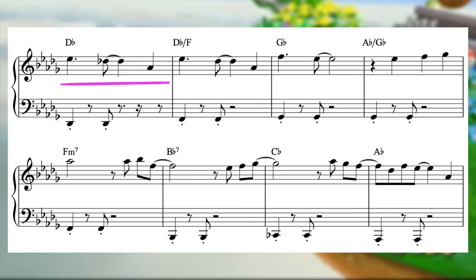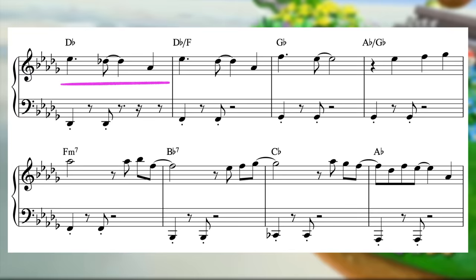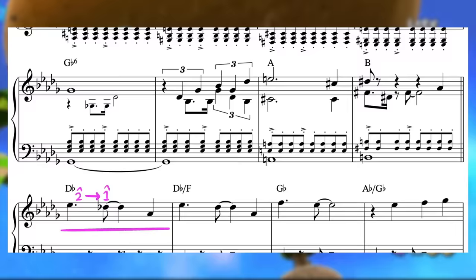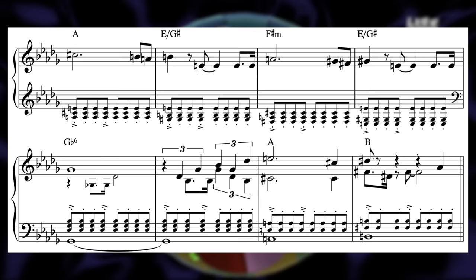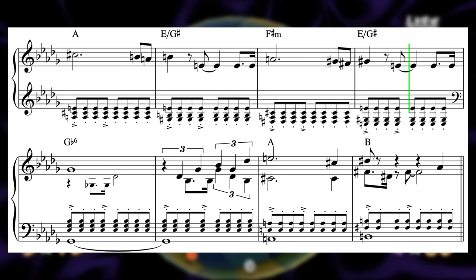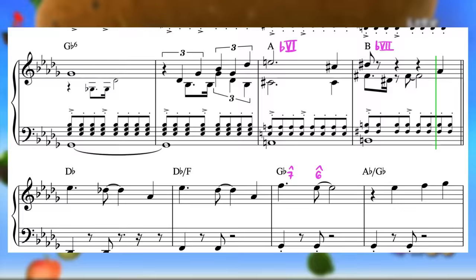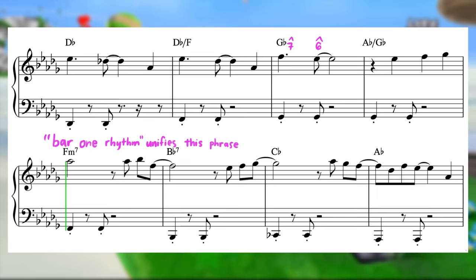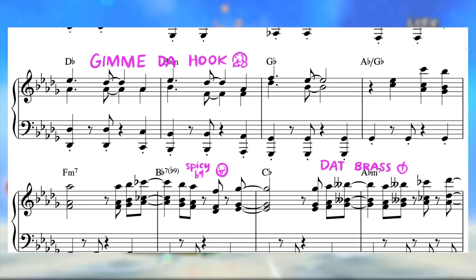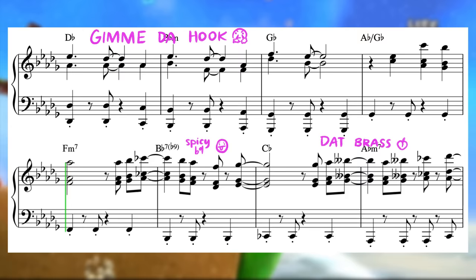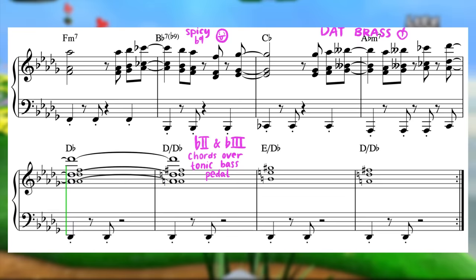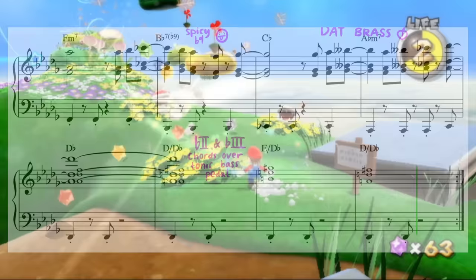The appoggiatura figure from the very first melodic phrase has been used many times up until this point in the piece, but never before has it resolved to our tonic note. Until now, building up from a contrasting B section in the distant key of A major, the music boldly returns to our home key with this triumphant melody. In fact, this section was so good that they used it in Super Mario Galaxy 2's main theme.